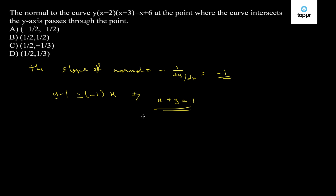This line passes through any one of the points in the options. The only point that satisfies the equation is option B, that is (1/2, 1/2), since 1/2 + 1/2 = 1. Hence option B is correct.